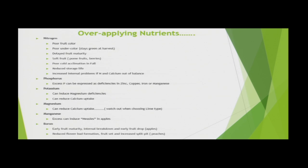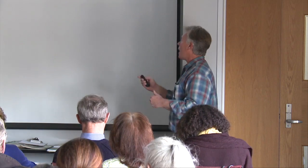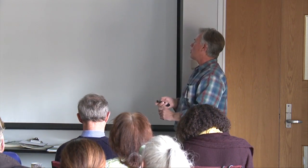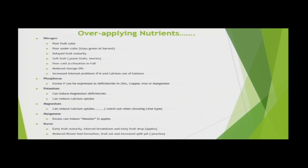One method I neglected to mention is using herbicide sprayers — you have a side boom close to the ground for applying herbicides along each side of the row. Some of these nutrients, assuming they're water soluble, can actually be put down at the same time you do your herbicide sprays — always read the label to make sure that's an acceptable method. Over-applying nutrients can cause serious problems: over-applying nitrogen leads to poor fruit color, poor under color, delayed fruit maturity, and soft fruit with some pome fruits and berries. You can read a whole host of problems that come from over-applying nutrients.